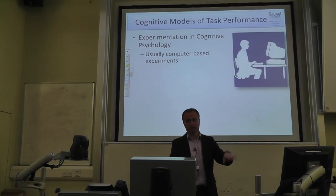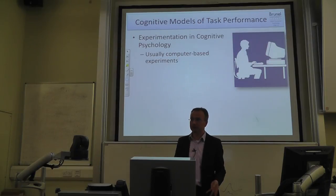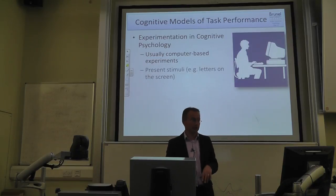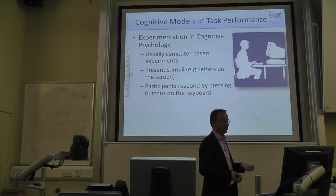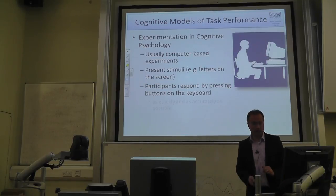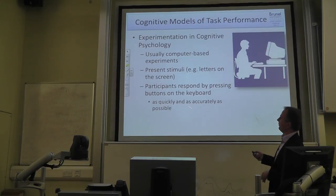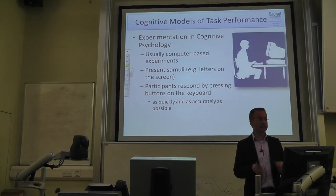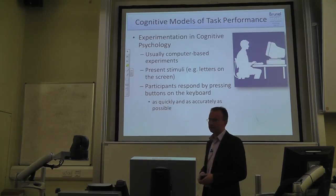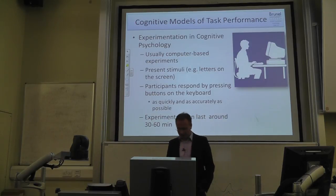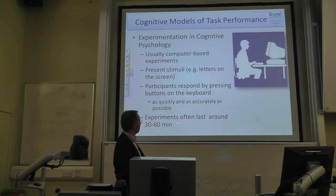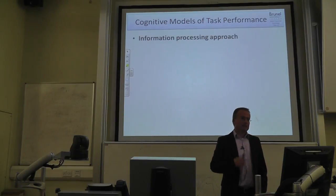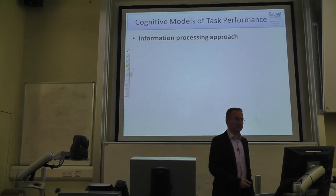Usually experiments are computer-based. You sit in front of a screen, possibly with headphones, and are presented with stimuli and press buttons. You are typically required to respond as quickly and as accurately as possible — finding a good trade-off between speed and accuracy. Such experiments usually last around 30 to 60 minutes per session.